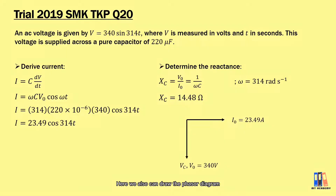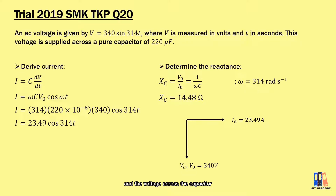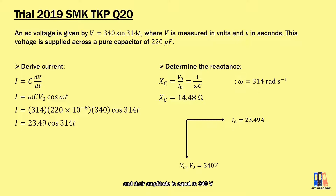Here we can also draw the phasor diagram: the current is to the right with an amplitude of 23.49 amperes, and the voltage across the capacitor and the applied voltage are lagging behind by 90 degrees with an amplitude equal to 340 volts.